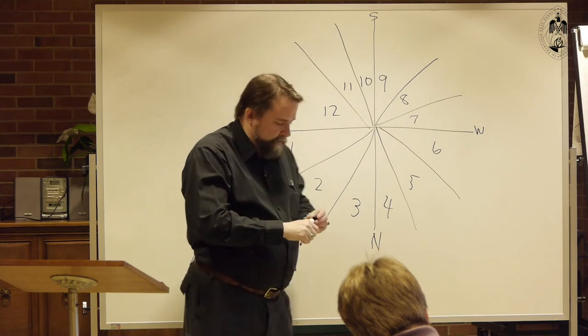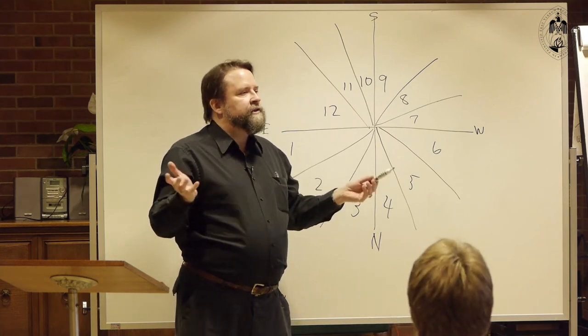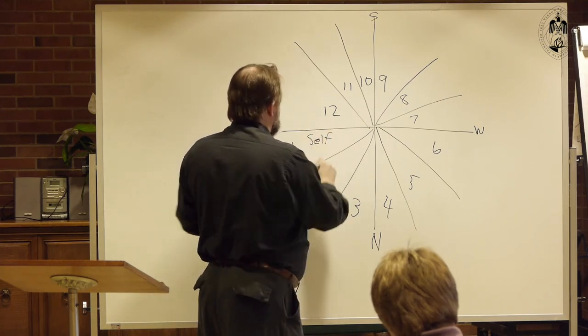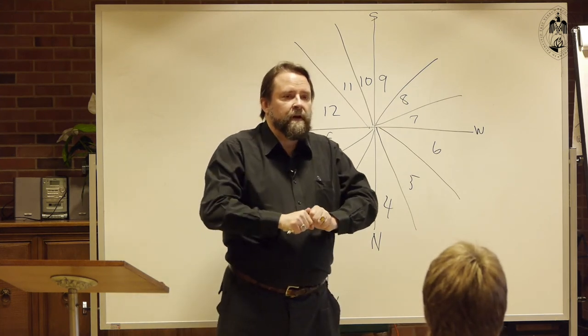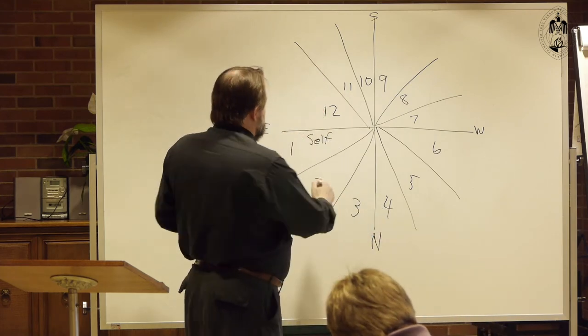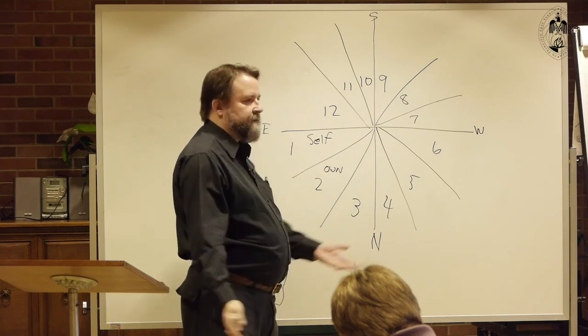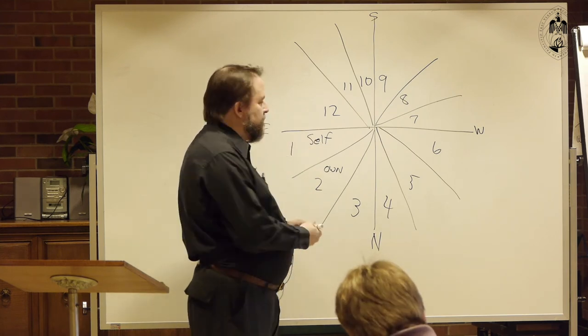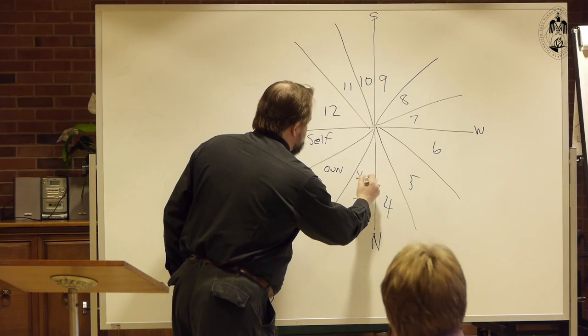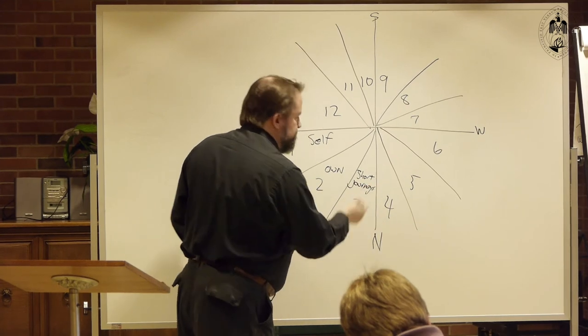Really quickly, the first house is you, you yourself, the house of the person themselves. This also means their constitution, your general health, things like that. Second, the house of things you own, your possessions. Why? Because right next to you is the stuff you own. Third is, well, you've got to not sit in one place, so you're going to go on short journeys - what's the neighborhood? And also people that are close to you, brothers and sisters.